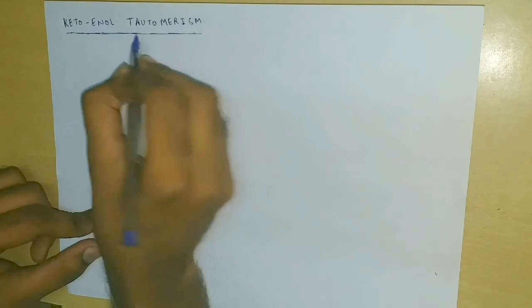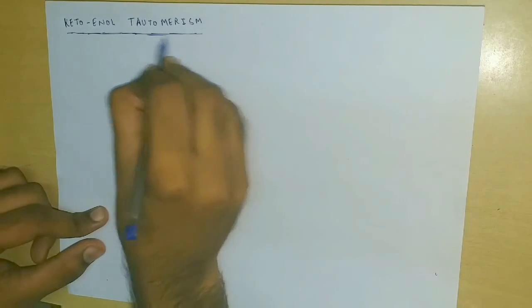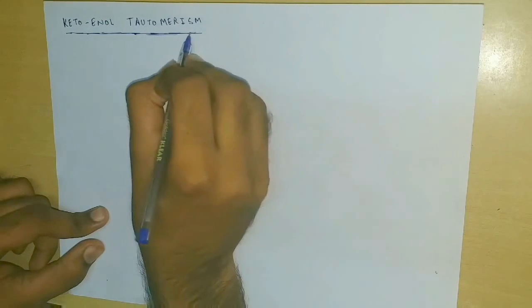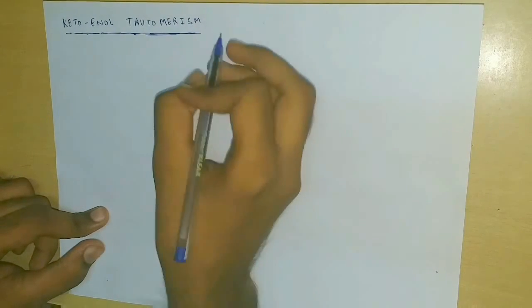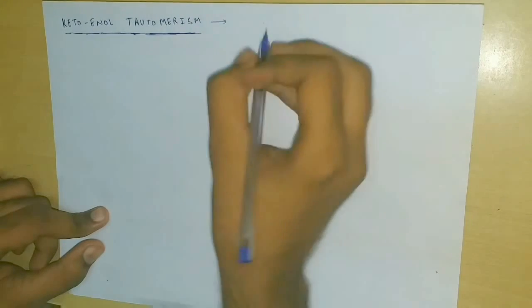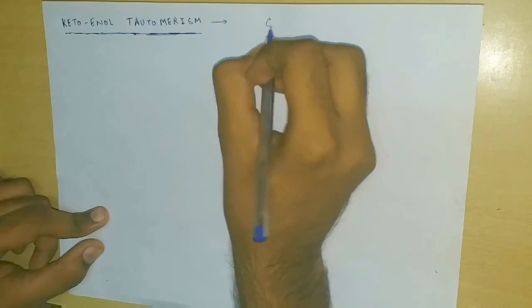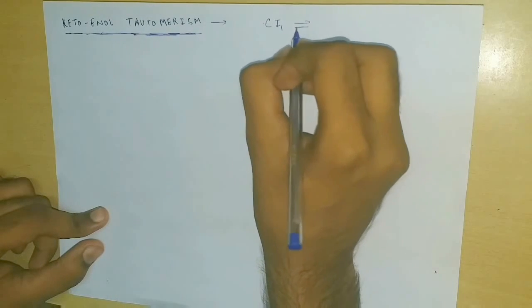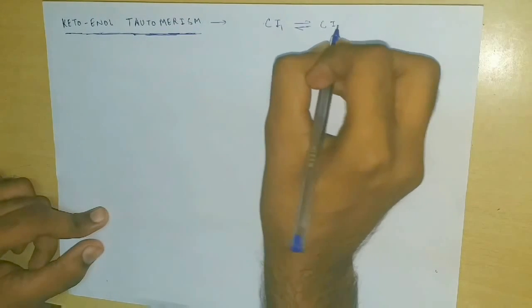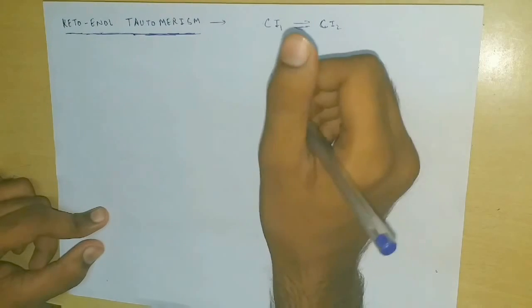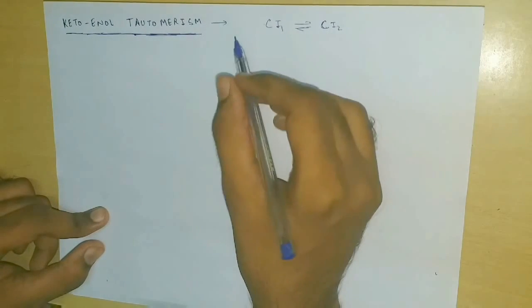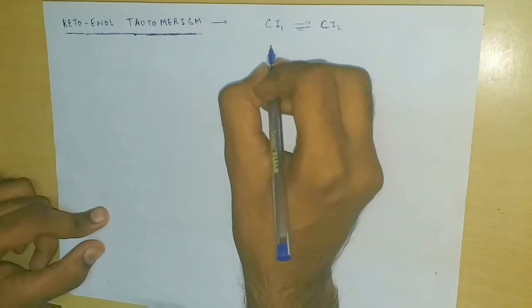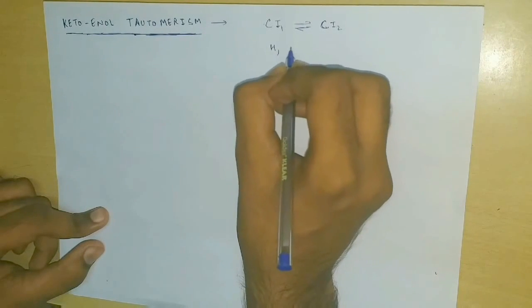In this video, I am going to discuss the Keto-Enol tautomerism. First of all, let's get familiar with all the terms. Tautomerism can be defined as a type of isomerism in which two constitutional isomers — say Ci1 and Ci2 — exist in equilibrium with each other, and the structures of these isomers are differentiated by the positions of a hydrogen atom and a double bond.